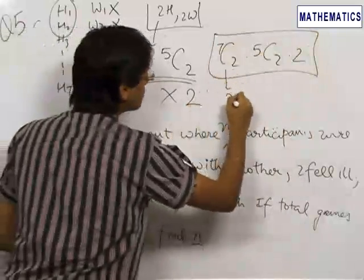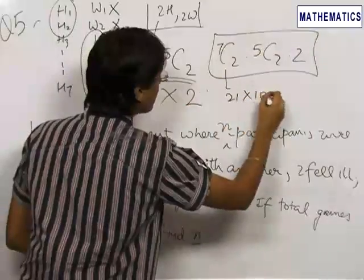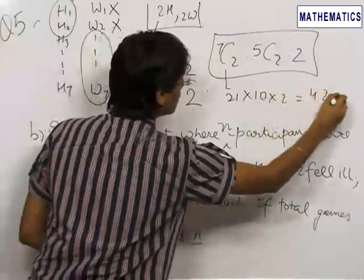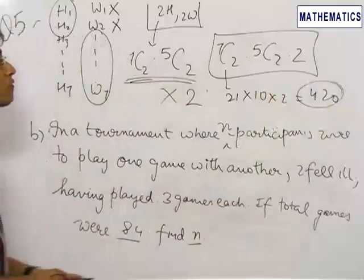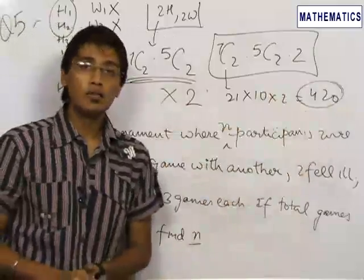And hence, our final answer is 7C2 into 5C2 into 2. 7C2 is 21. This is 10, this is 2, this is 420. And hence, our final answer for the first part is 420.